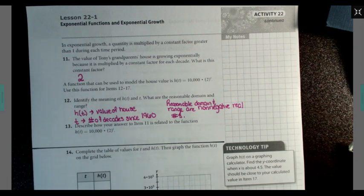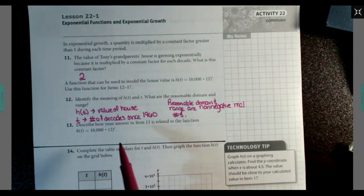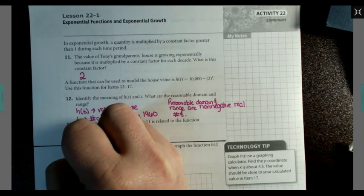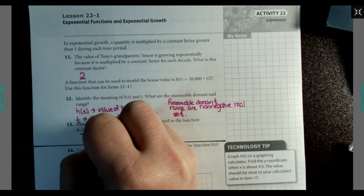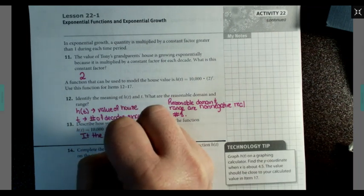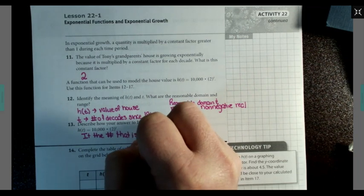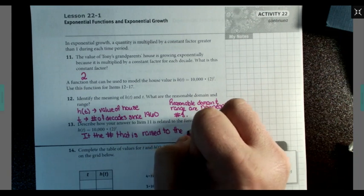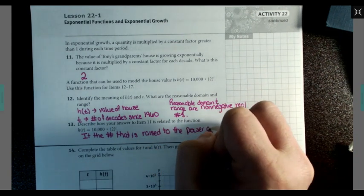Number 13, describe how your answer to item 11 is related to the function h(t) = 10,000 times 2 to the t power. How is this 2 related to this function? It is the number that is raised to the power of t.